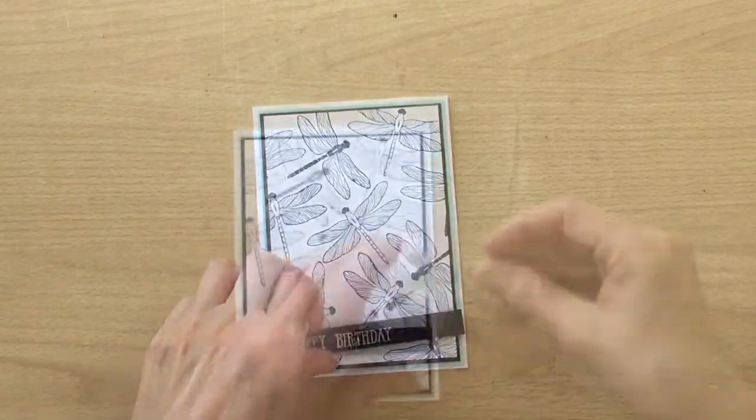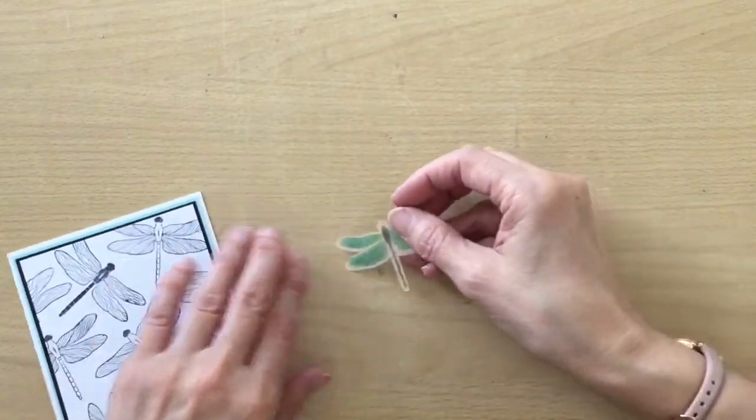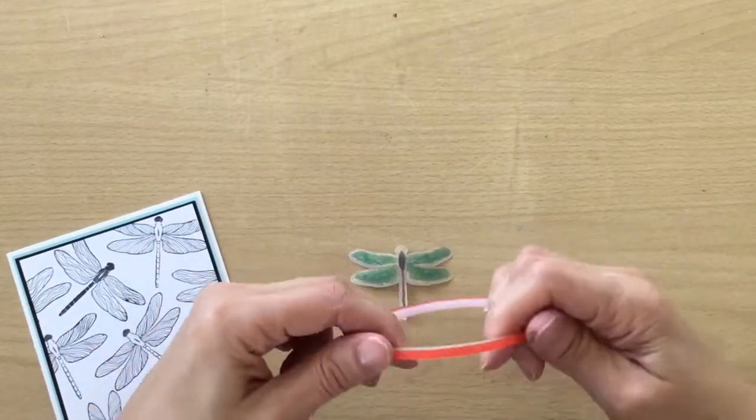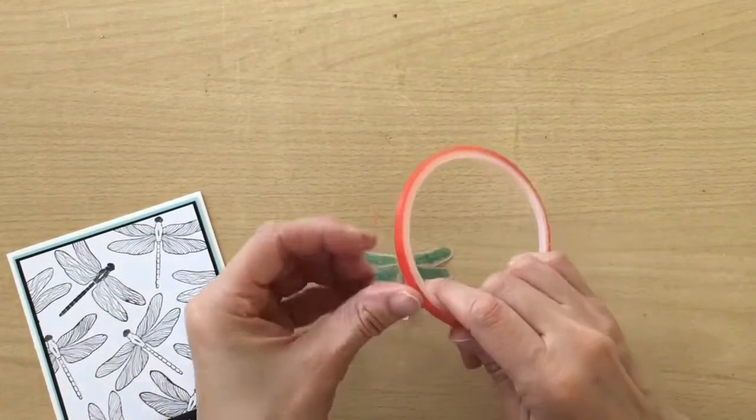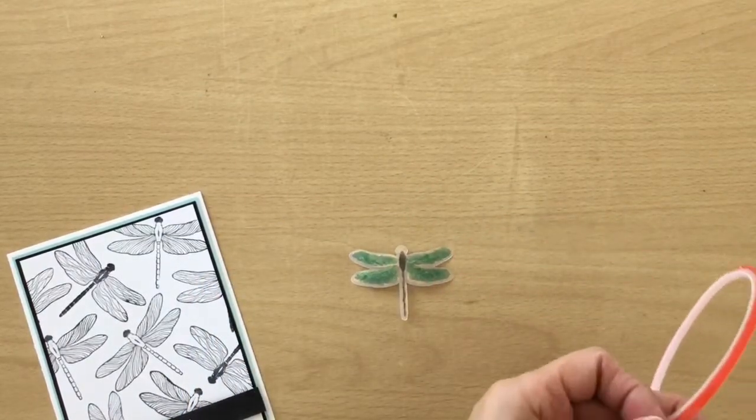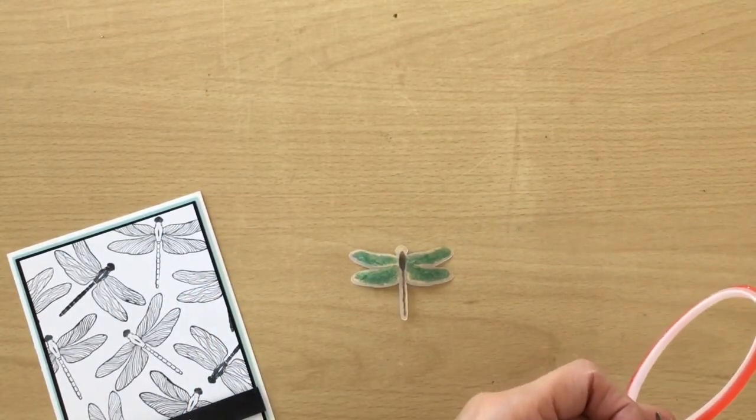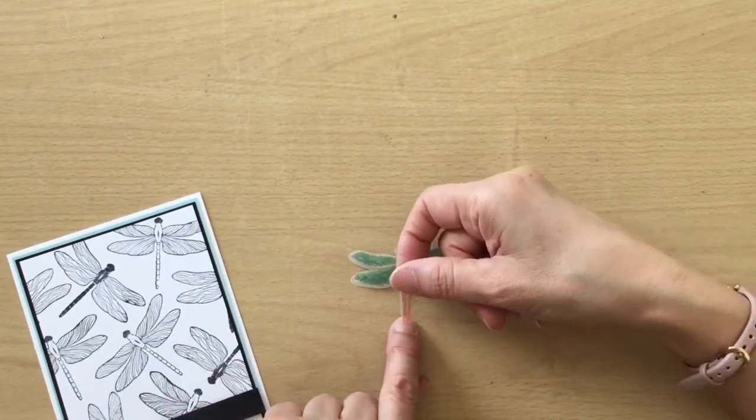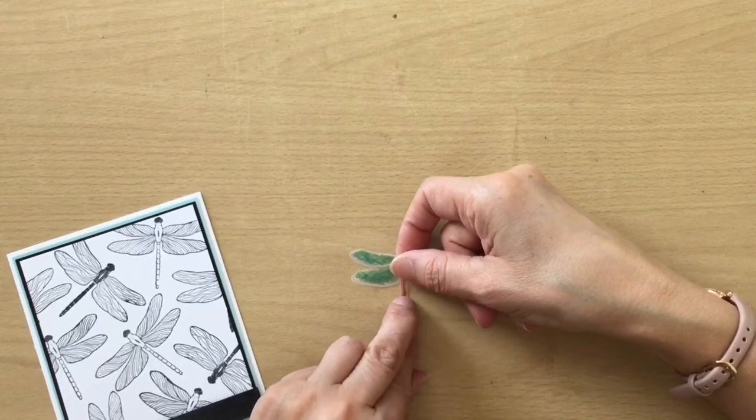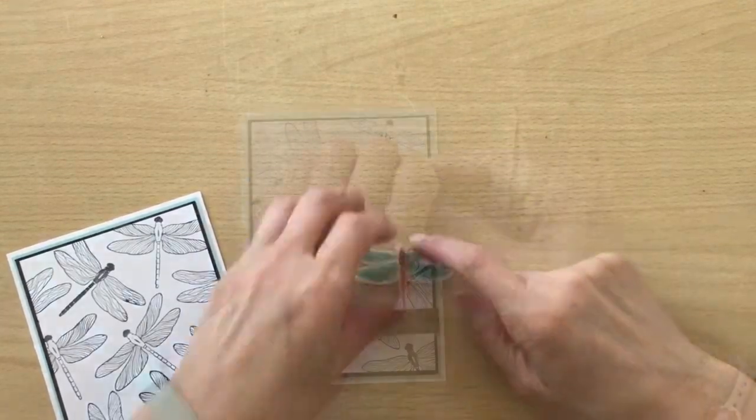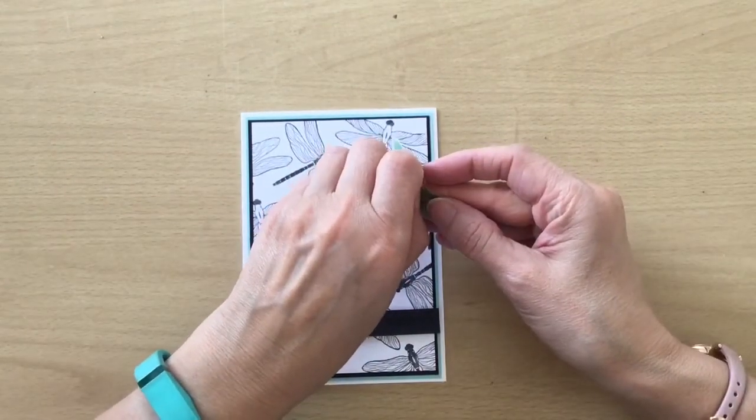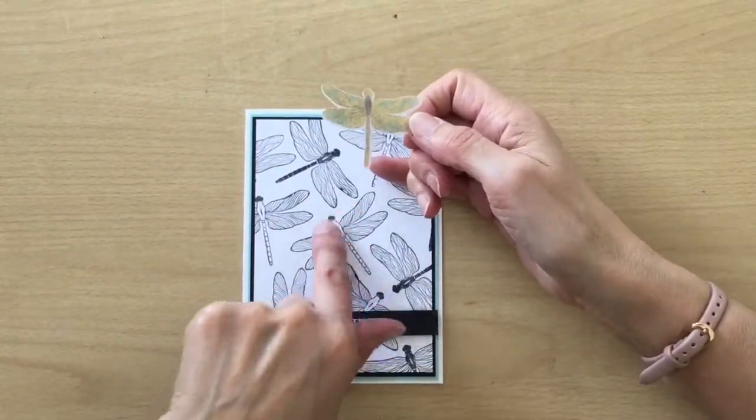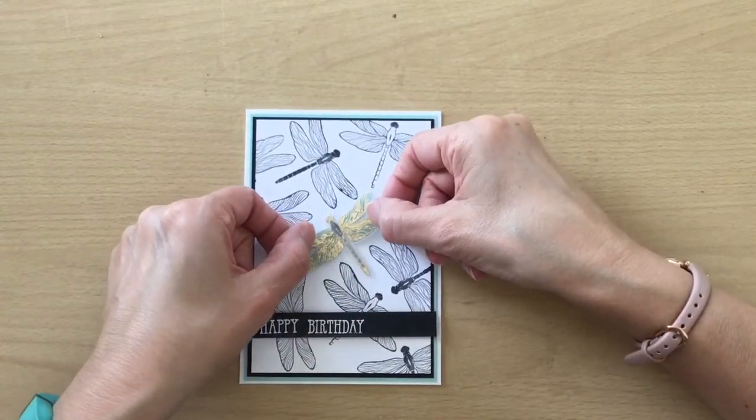And then my dragonfly. So on the back of the dragonfly I've just got some double-sided tape. This one is really quite thin. I'm going to put this along the dragonfly's body and tape back off.